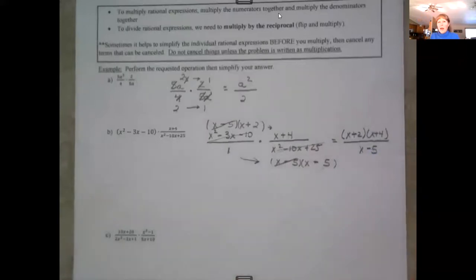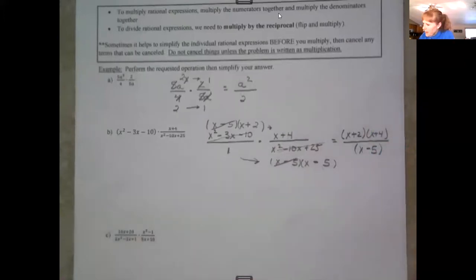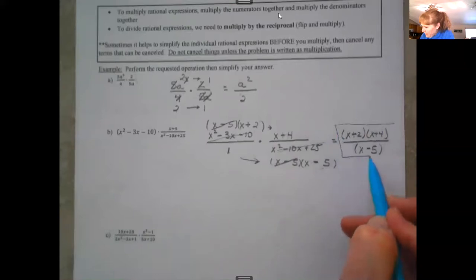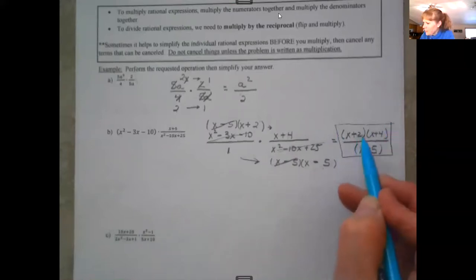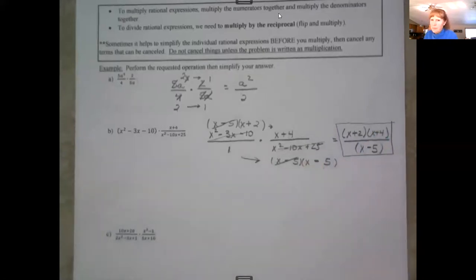And you're done. You can put parentheses around that — you don't have to, but you can. I'm hoping that MathLab will accept that; otherwise you'd have to use FOIL, but I believe you can finish at this point without multiplying out the numerator. That's all there is: factoring and canceling anything in the numerator with anything in the denominator.